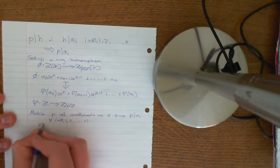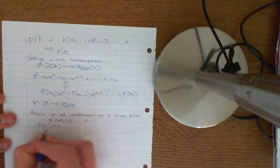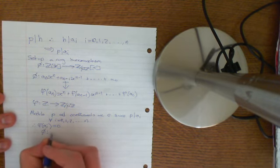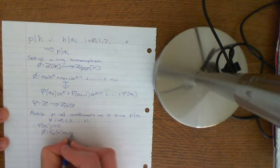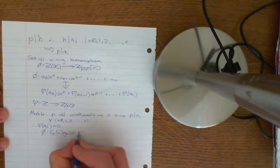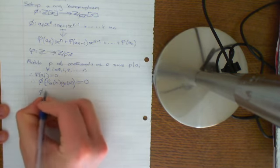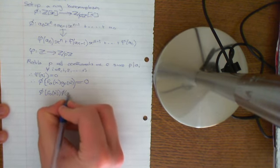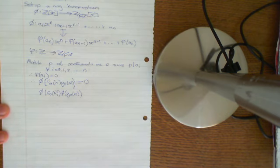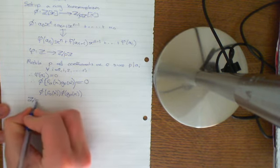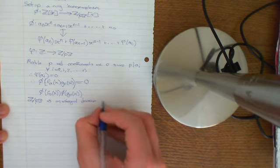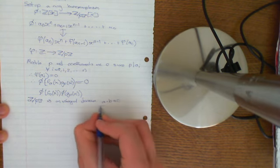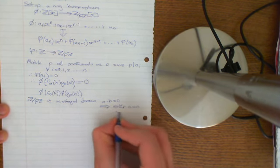Therefore Φ(a_i) = 0 for all i. Therefore Φ of the product polynomial F₀(x)·G₀(x) equals zero. But since Φ is a ring homomorphism, I can split this as Φ(F₀(x)) times Φ(G₀(x)) = 0. Now, another theorem from ring theory: Z mod pZ is an integral domain — in fact it is a field, and all fields are integral domains — meaning if a times b equals zero, then either a equals zero or b equals zero.